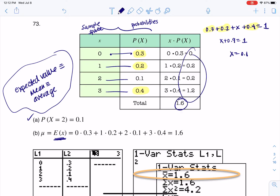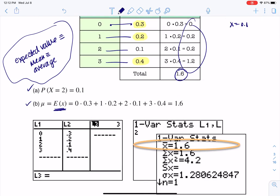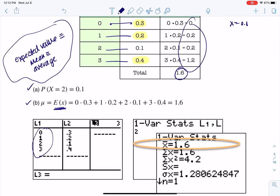I actually, well, I genuinely do think it's fun. But the quicker way is just to put your sample space typically in L1, the probabilities in L2, and then run one of our stats L1 comma L2 and read x bar. And there's your mean.